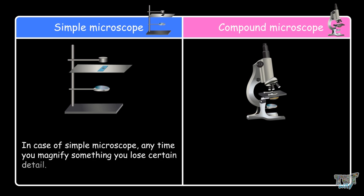In the case of a simple microscope, any time you magnify something, you lose a certain detail. In the case of a compound microscope, there is less loss of detail.